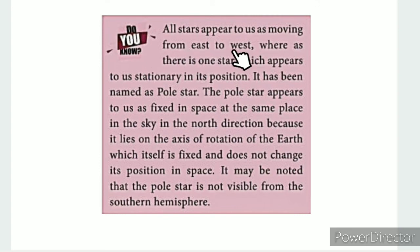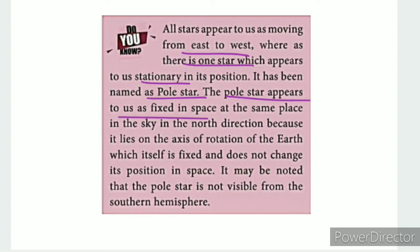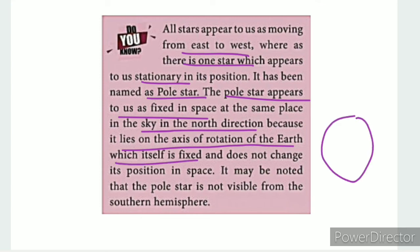Do you know? All stars appear to move from east to west, but there is one star that appears stationary — the Pole Star. It is fixed because it lies along the axis of rotation, which points in the north direction.